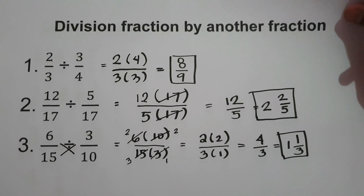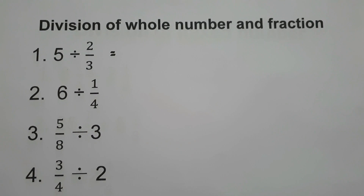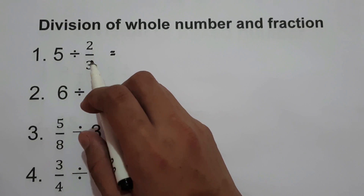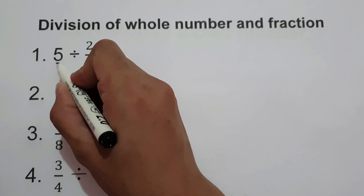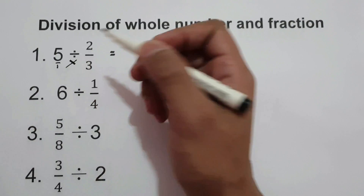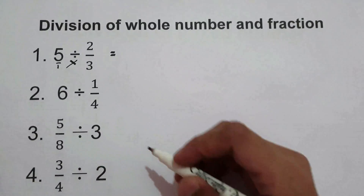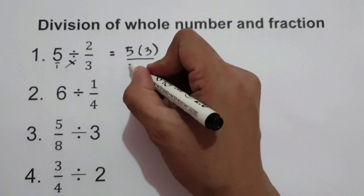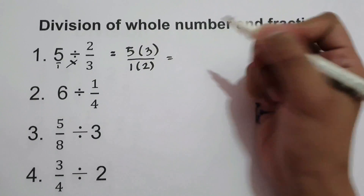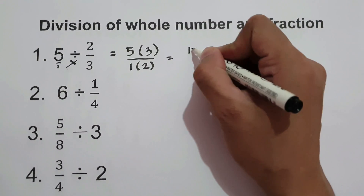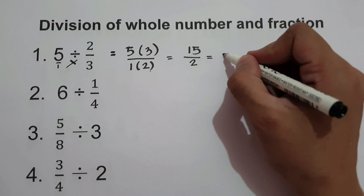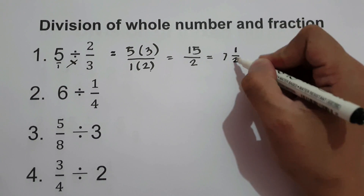Let's have another example. This time we are going to divide a whole number by a fraction. We simply cross multiply. For example, 5 divided by 2/3. Since 5 is a whole number, its denominator is 1. Cross multiplying: 5 times 3 over 1 times 2 gives us 15 over 2. 15 divided by 2 is 7 with a remainder of 1, so the answer is 7 and 1/2.